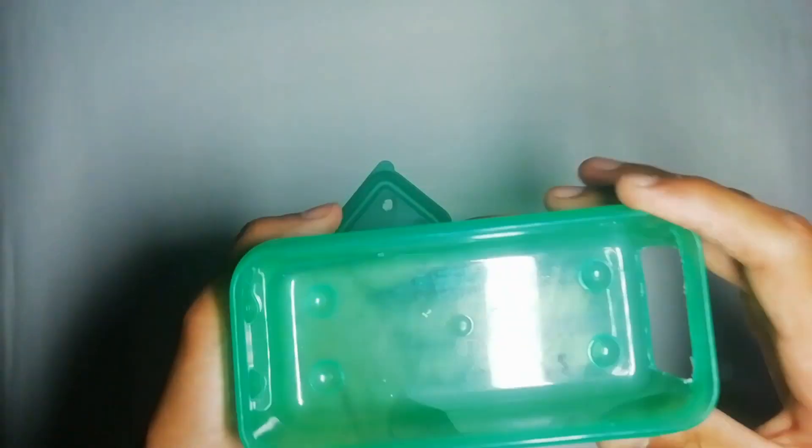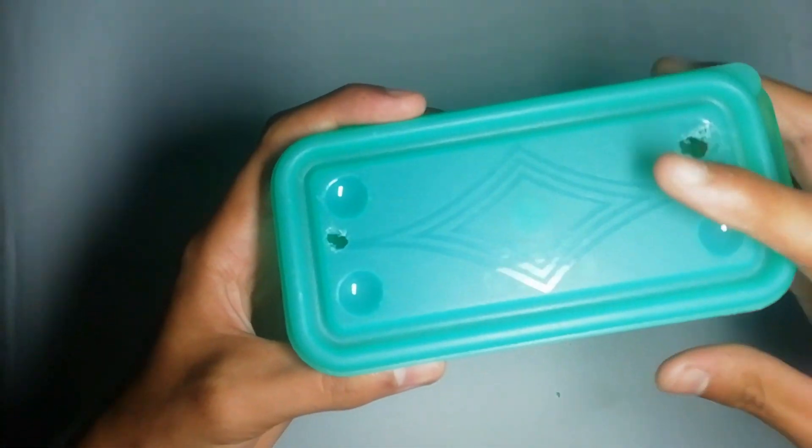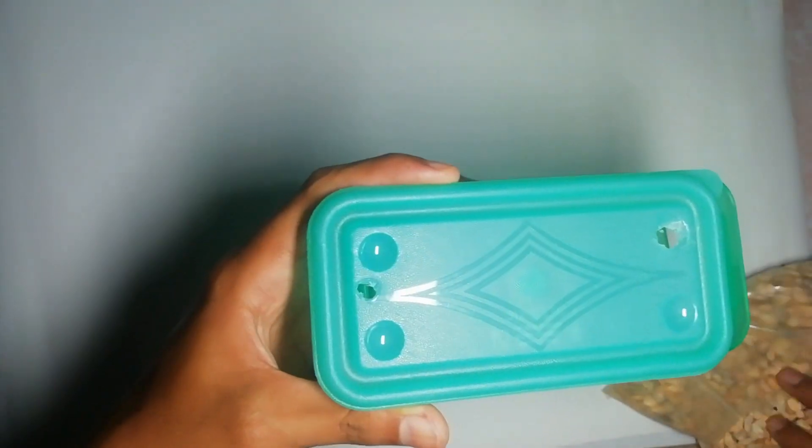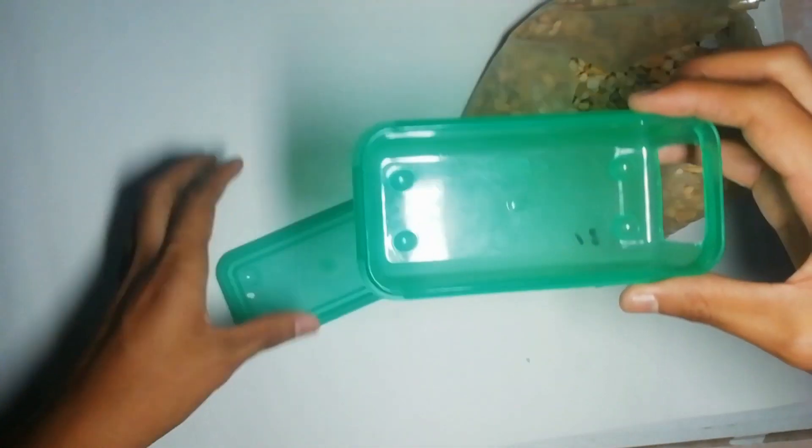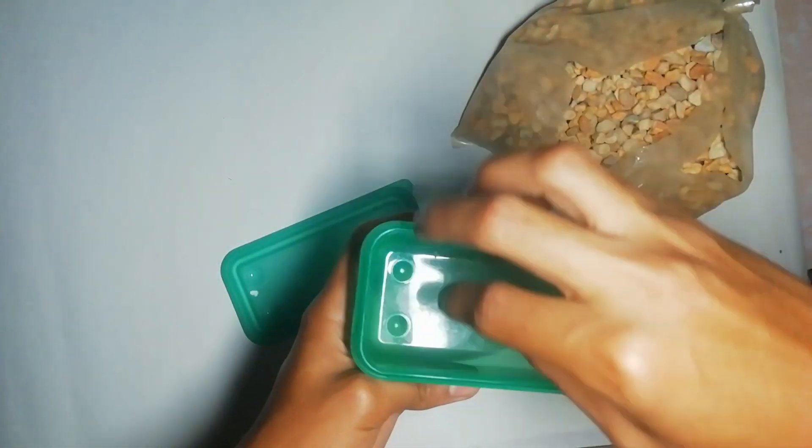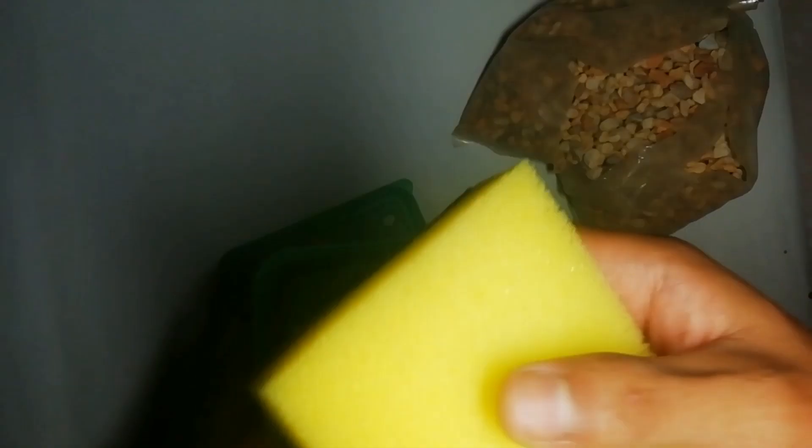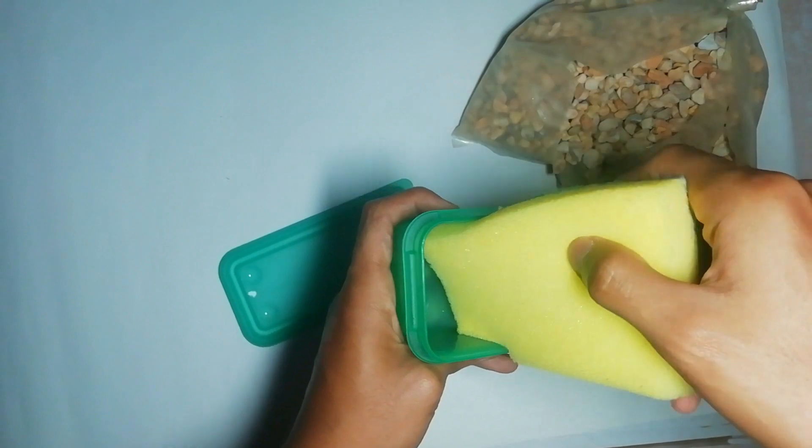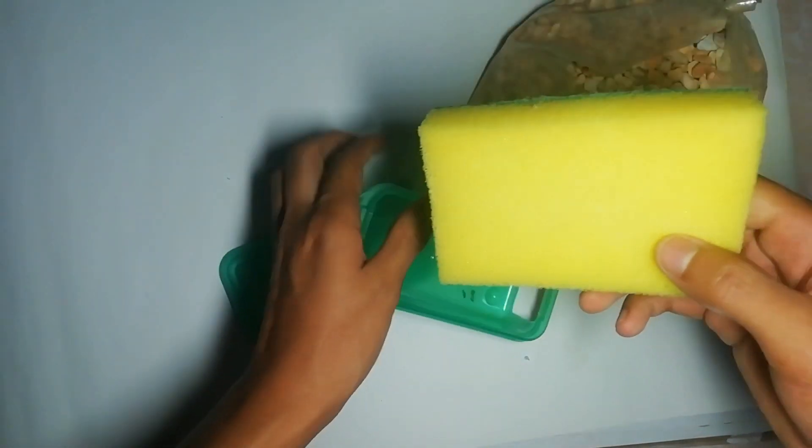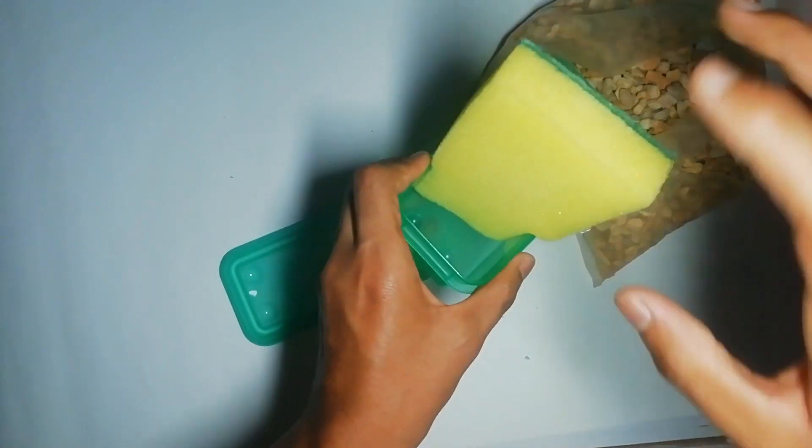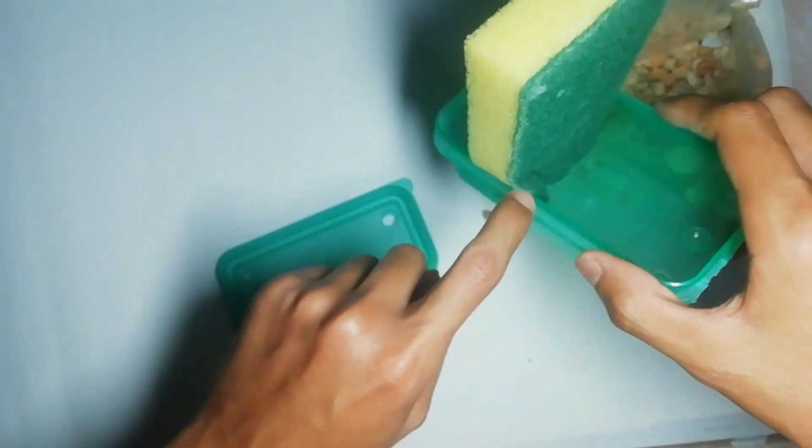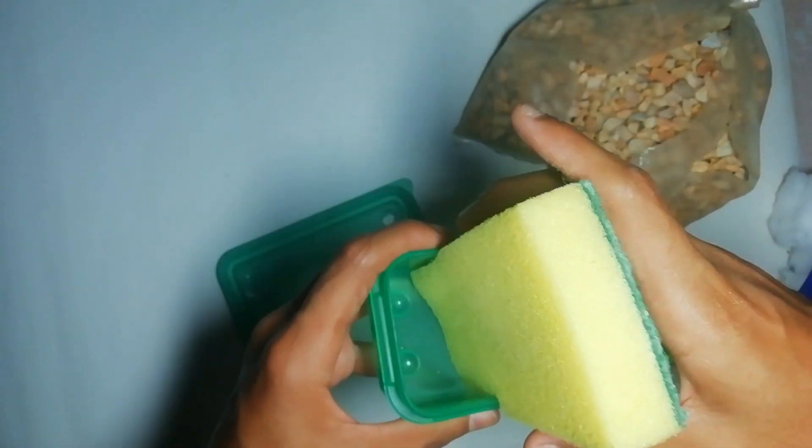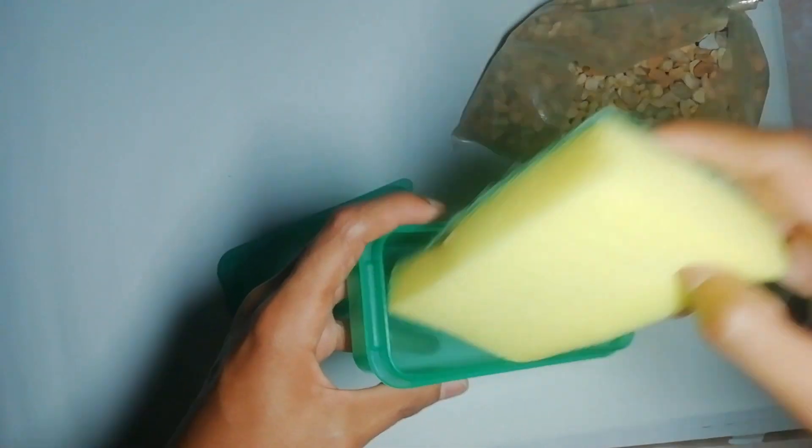Vamos a acomodar de esta manera el material filtrante. Como podemos observar por aquí va a entrar el agua, por lo tanto aquí vamos a poner donde va a ir cayendo el agua, vamos a poner el material filtrante que van a ser en este caso las piedras. Como no tenemos separado nada, el siguiente material va a ser la esponja. Primero voy a poner la esponja aquí para que puedan quedarse aquí las piedras, porque si lo hago así se van a empezar a regar todas por acá. Lo vamos a tener que cortar pero nada más les voy a decir cómo lo van a ir acomodando. El último material va a ser el algodón.